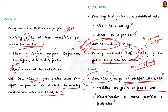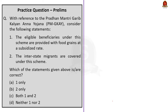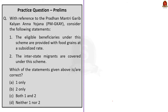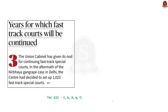The eligibility criteria for the scheme are given for your reference — please go through it. This is all about the Pradhan Mantri Garib Kalyan Anna Yojana. With these learned points, let us complete this discussion and take up the next news article for our analysis.